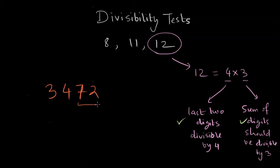In this case, the last two digits are 72, and we know that 72 is divisible by 4 since 18 times 4 is 72. The sum of digits is 3 plus 4 plus 7 plus 2, which is 16. But 16 is not divisible by 3.